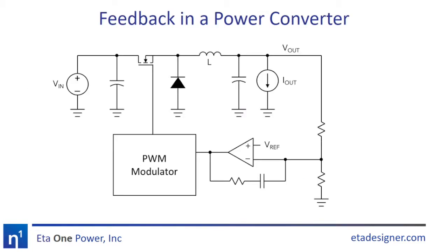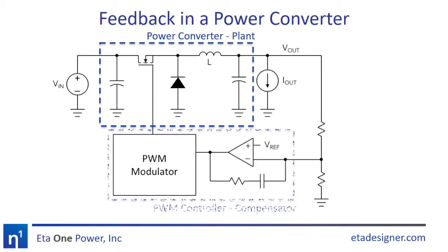So here is a typical closed-loop power supply. The power conversion stage is our plant, controlled by a duty cycle and producing an output voltage. The PWM controller is our compensator here, comparing the difference between a reference voltage and the output voltage divided down by a feedback network.